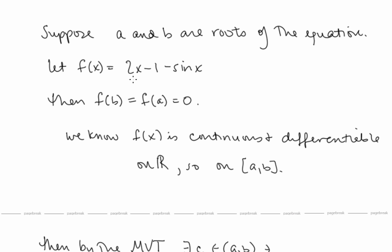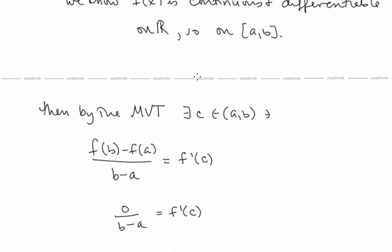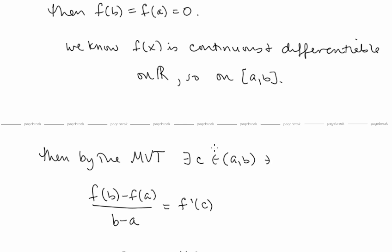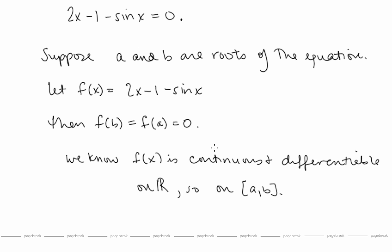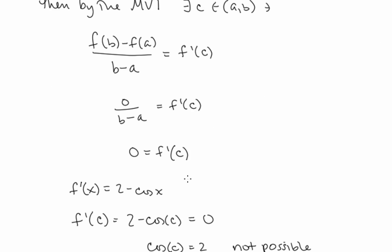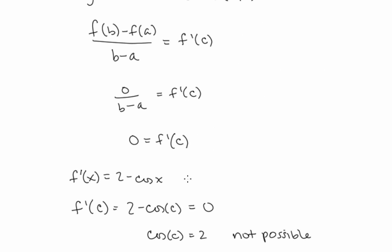But notice that for this function, f'(x) = 2 − cos(x). So f'(c) = 0 means 2 − cos(c) = 0, which means cos(c) = 2. That's not possible, because cosine values are bounded by 1. So if we have two solutions to this equation, we get a contradiction by the Mean Value Theorem — therefore, there can't be two solutions to the given equation.